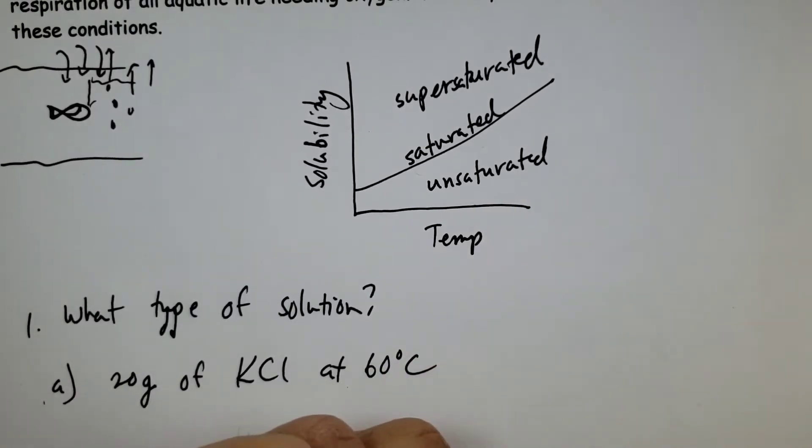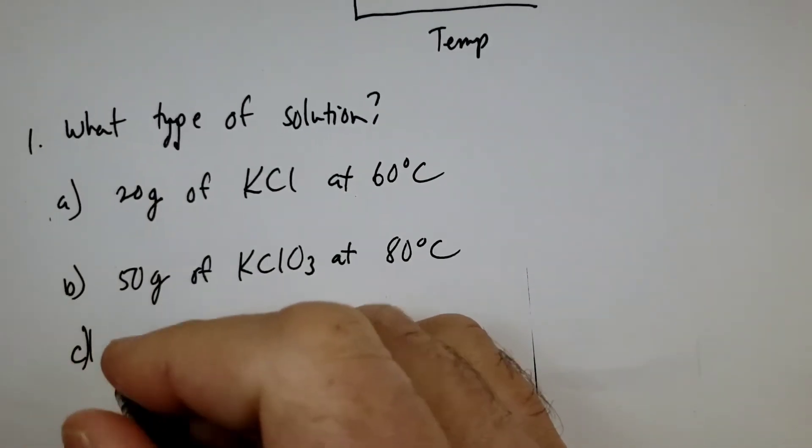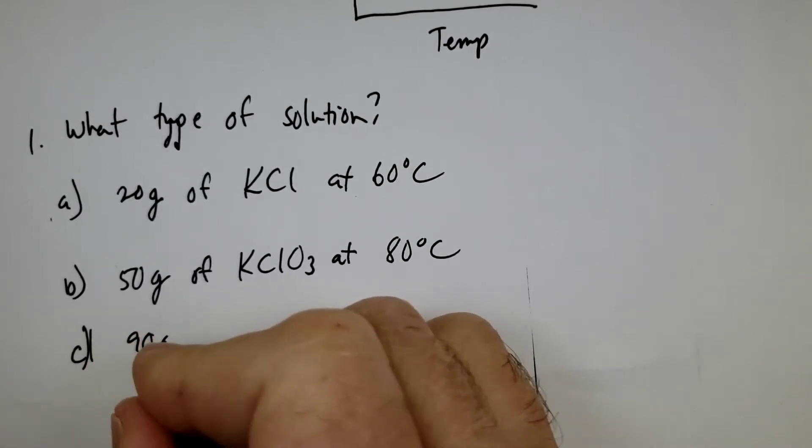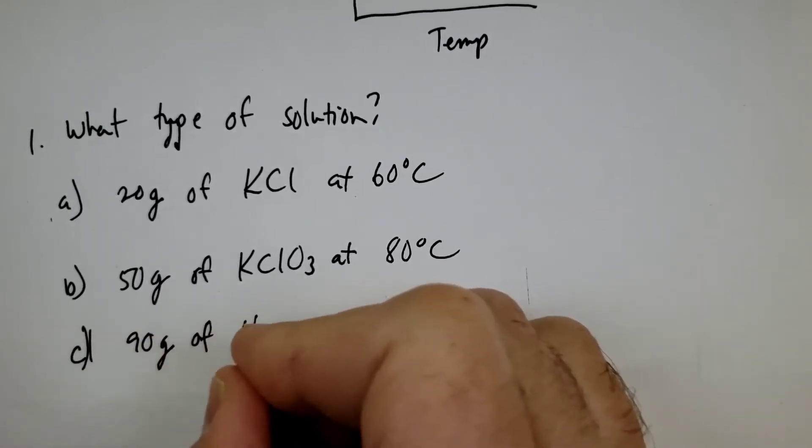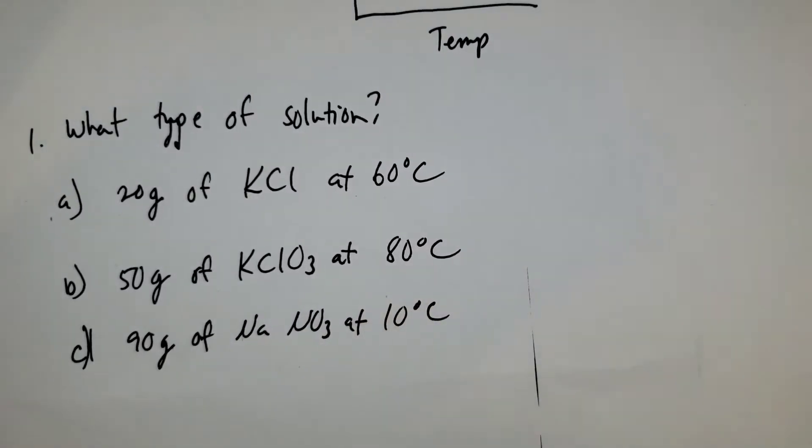B, let's look at 50 grams of KClO3 at 80 degrees C. Then let's look at 90 grams of NaNO3 at 10 degrees C. So we'll do a couple of questions here. So pause the video, copy those questions out, and then we'll look at the graph to see exactly what type of solutions those will be.